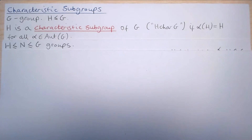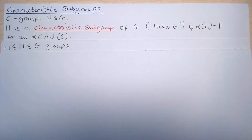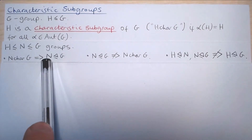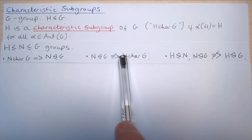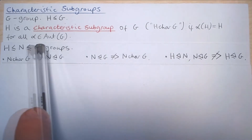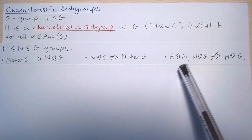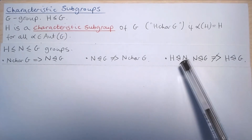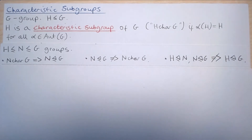In other words, given this chain of subgroups H, N, and G of a group G, we've shown already that if N is characteristic in G then N is normal in G. We've shown that if N is normal in G this does not imply that N is characteristic in G. In other words, the property of being a characteristic subgroup is strictly stronger than the property of being a normal subgroup. And we showed in another video that if H is normal in N and N is normal in G, this does not imply that H is normal in G.